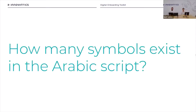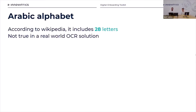In your opinion, is there an exact answer — how many symbols exist in the Arabic script, or does it really depend on the situation? Wikipedia says the Arabic alphabet has 28 letters. Technically speaking, that's correct,